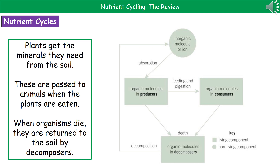On the right hand side you can see a diagram summarizing what we see happening. We start off with the inorganic molecule or ion at the top — one of the non-living components, because they're just molecules or ions, they're not living things. Those are then absorbed by our producers and changed into parts of the plant, such as proteins and carbohydrates. At that point we're in our living component.